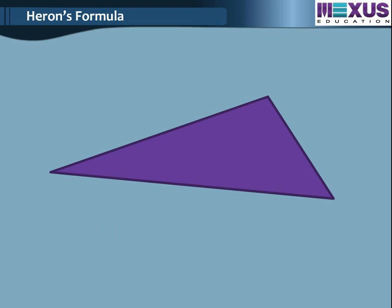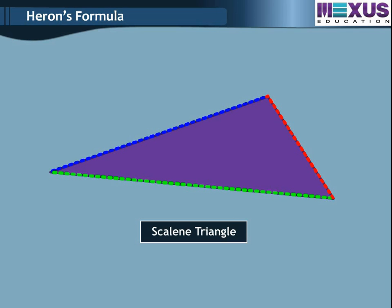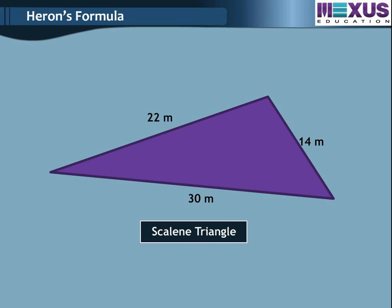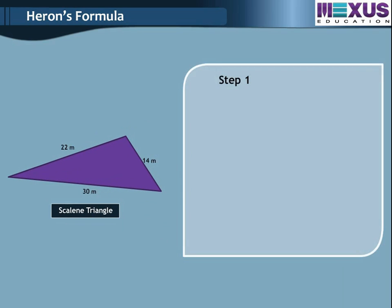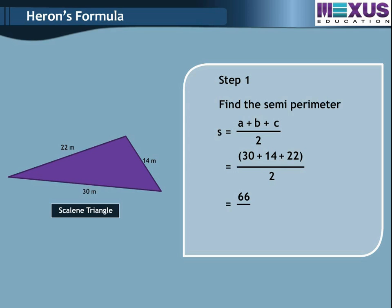Now, we will see an example for a scalene triangle. It has all different side lengths and no height, so we cannot use the Pythagoras formula. Let us use Heron's formula. Suppose the lengths of the scalene triangle are 30 m, 14 m and 22 m. Step 1: Find the semi-perimeter S. S equals (A plus B plus C) divided by 2, equals (30 plus 14 plus 22) divided by 2, equals 66 divided by 2, equals 33 m.